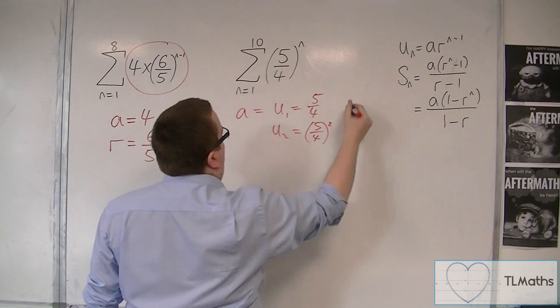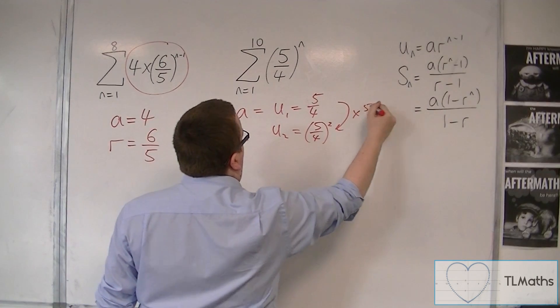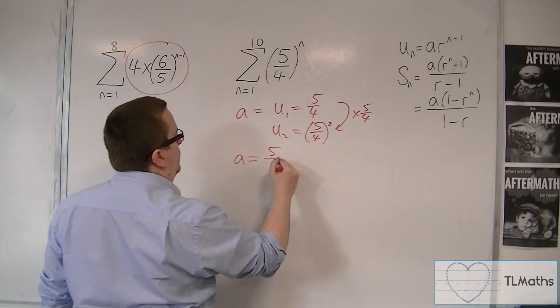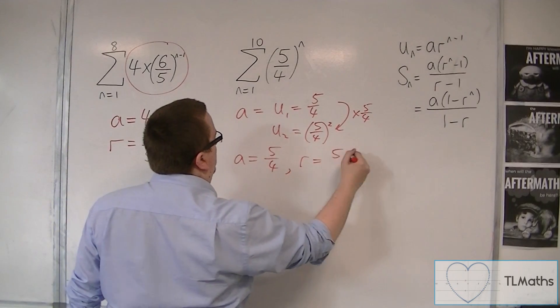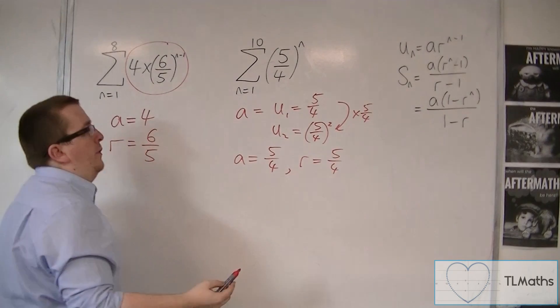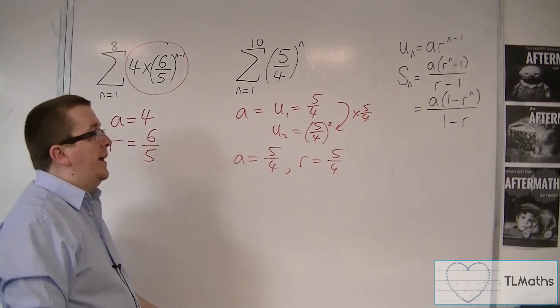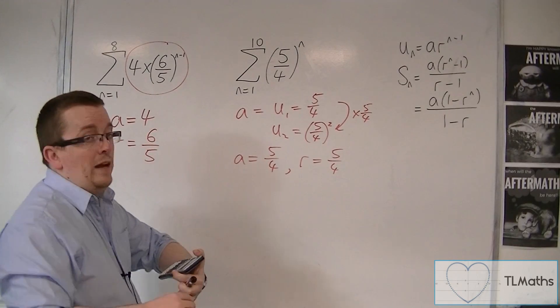So that is effectively multiplying by 5 quarters. So you'd have a is 5 quarters and r is 5 quarters. And then you could sub those into this formula up here with n being equal to 10. Okay, and you could go about it that way.